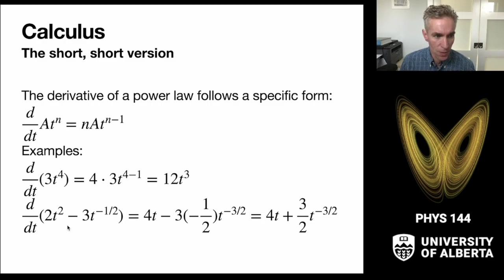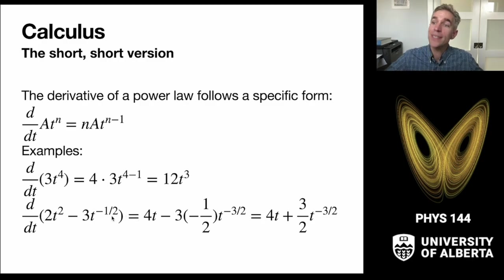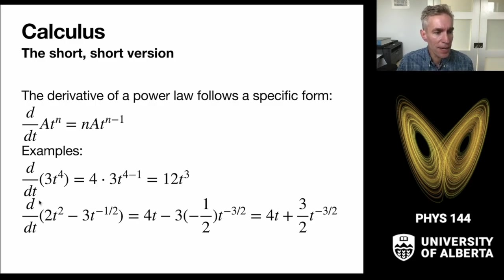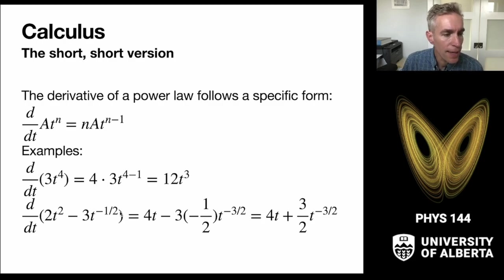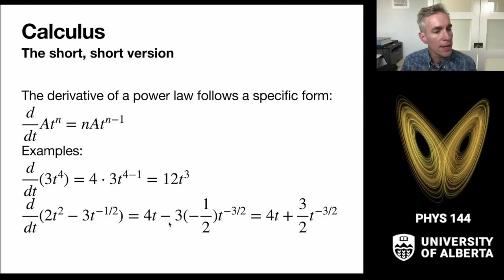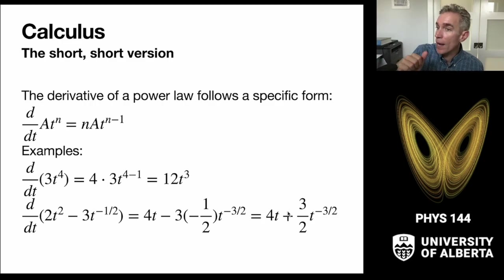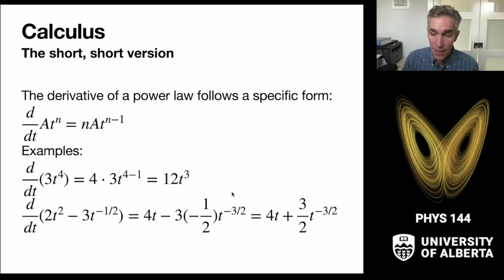Applying the linear rule to d/dt of (2t² − 3t^(−1/2)): I apply the time derivative to each term separately. For 2t², pull down the power 2, giving 2×2 = 4, and the exponent becomes 1, so that's 4t. For −3t^(−1/2), pull down the power −1/2, so (−1/2)×(−3) = +3/2, and the new exponent is −1/2 − 1 = −3/2. The result is 4t + (3/2)t^(−3/2). Those are the basics of the mechanics.